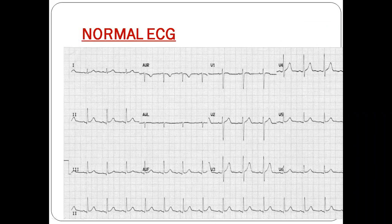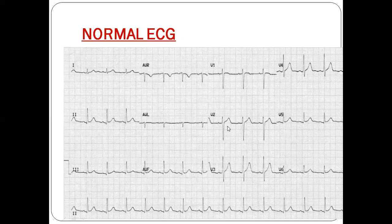Before going to fibrillatory ECG, we should know what normal ECG looks like. Normal ECG shows a small P wave, then the R wave, RS wave — that is the QRS wave — followed by a T wave. Normal sinus rhythm should have all the waves: P wave, then QRS wave, and then T wave. Similarly, P wave, QRS wave, and T wave.